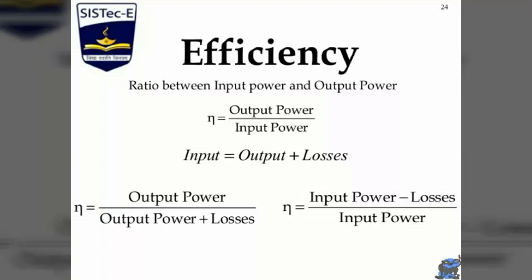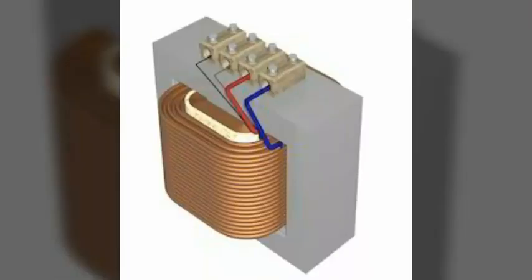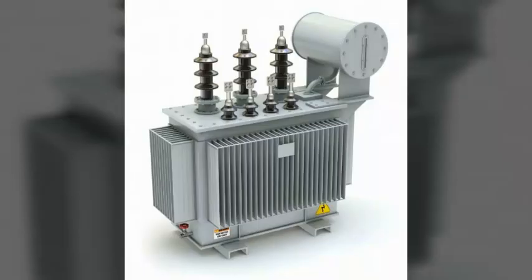A transformer has two coils, and the efficiency of a transformer is defined as output power divided by input power. Efficiency tells us how much energy is lost and how much is delivered. We can see different architectures of the transformer illustrating this.